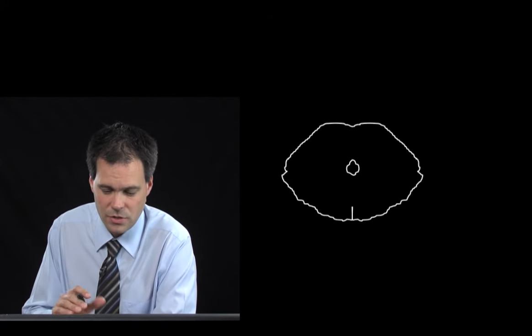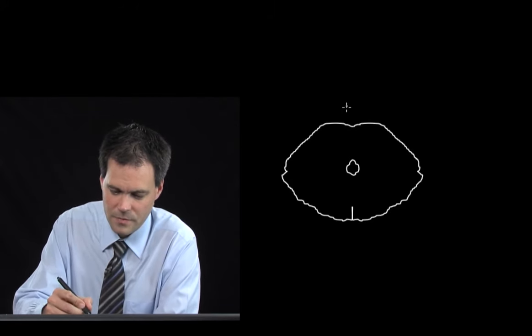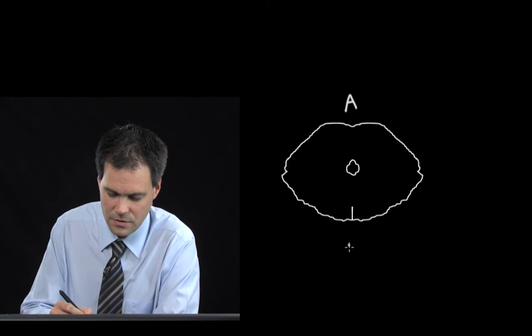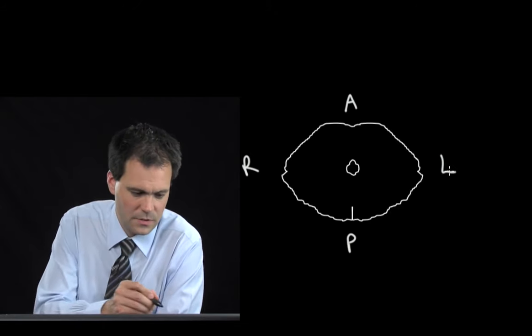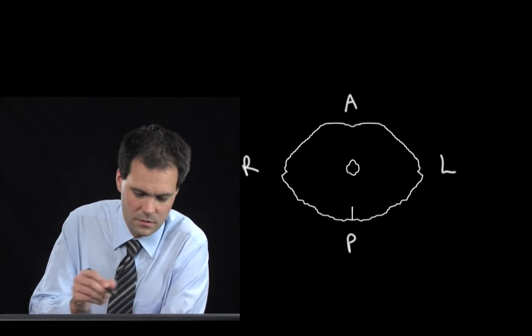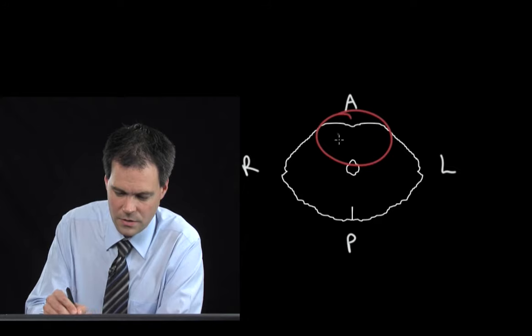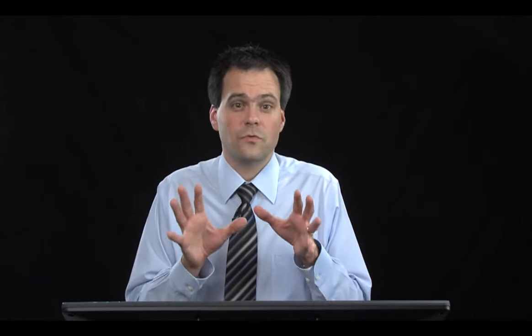Here's a cross-section of the pons and the cerebellum — anterior, posterior, right, and left. Remember the right cerebellum controls the right side of the body and the left brain controls the right side of the body. In ataxia hemiparesis, the ataxia is on the same side as the hemiparesis.